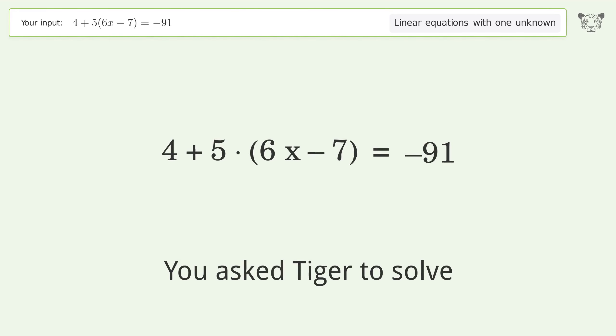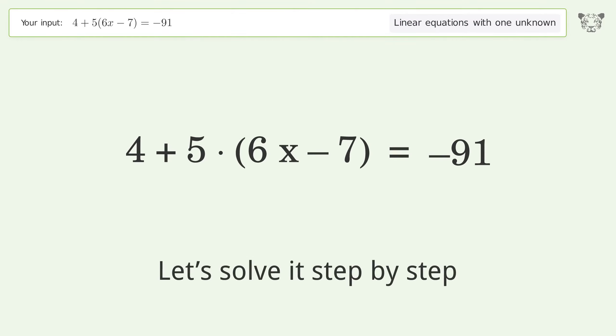You asked Tiger to solve this. This deals with linear equations with one unknown. The final result is x equals negative 2. Let's solve it step by step. Simplify the expression.